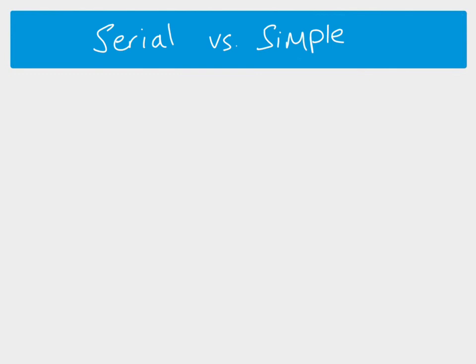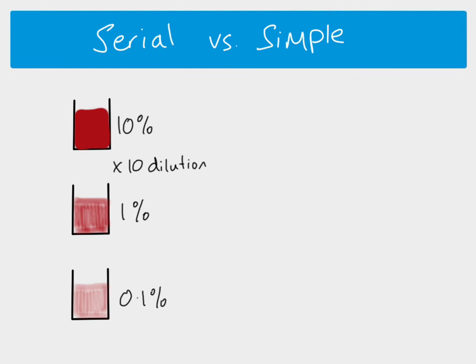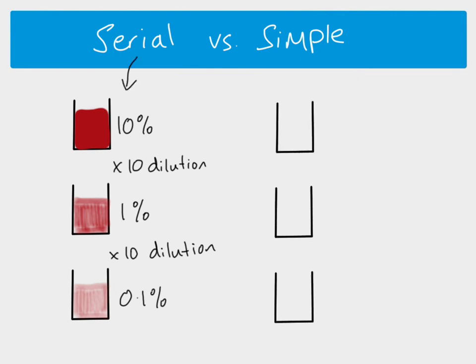So what is the difference between a serial dilution and a simple dilution? Let's say we're going to make three dilutions and we start off with our first solution — a 10% solution — then a second solution which is 1%, and then finally a third dilution at 0.1%. We're going from 10 to 1 to 0.1, so each time there is a times-10 dilution factor. From 10 to 1 it's been diluted 10 times, and from 1 to 0.1 it's also been diluted 10 times. This is a serial dilution.